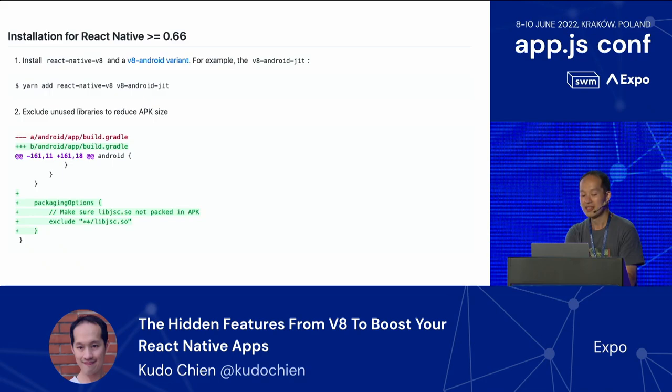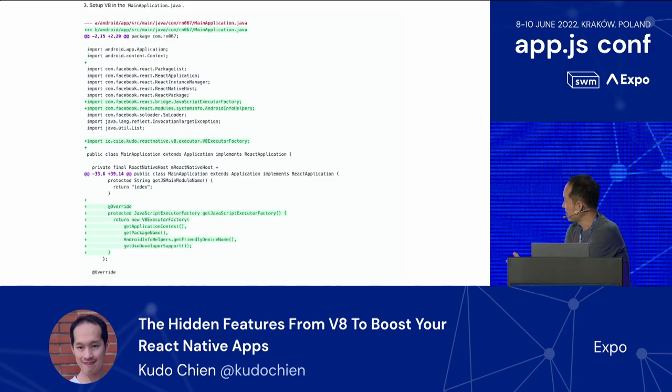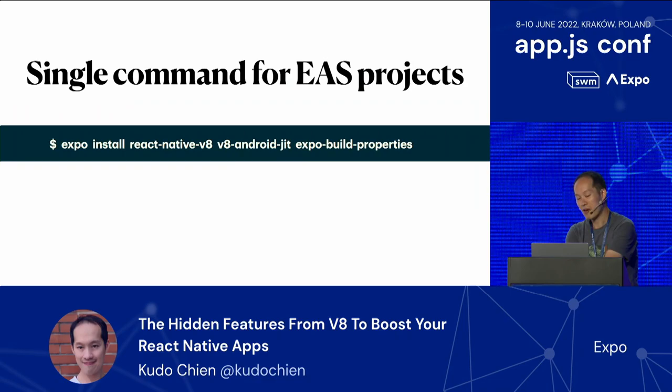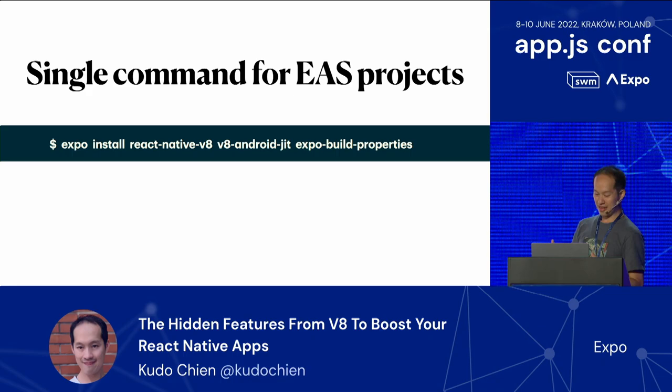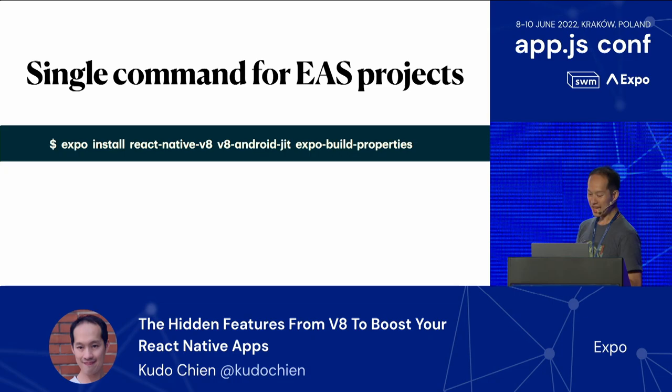To install V8 on a React Native project, you need quite a few steps: installing packages, changing your Gradle file, your Java file, and Gradle property files. But if you're running an Expo project, you just need a single command — install these three different properties. I'm echoing the keynote from Evan and Tomaj yesterday: we're trying to do some fancy stuff to make library installation easier. If you want to know what's going on under the hood, talk to us.